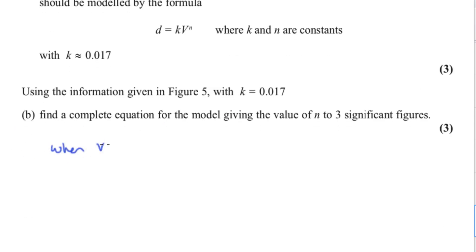When v equals 30, d equals 20. So 20 is going to equal k, the 0.017. We are going to use k equals 0.017, not the better answer that we had on our calculators. They've told us to use exactly 0.017 times by 30 to the power of n. We've got to find n, so to do that I'm going to divide by the k.